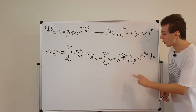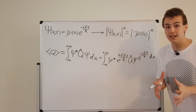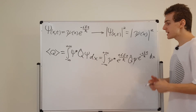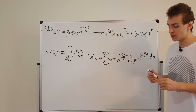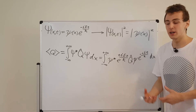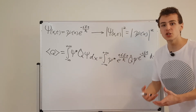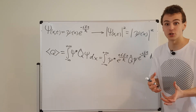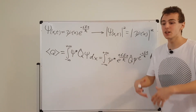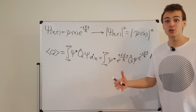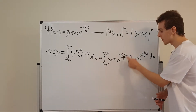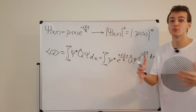Luckily for us, all of the operators we're dealing with depend on x and p. All operators can be written in terms of position and momentum. This is analogous to Newtonian mechanics: in classical mechanics, you can take any quantity you're measuring and write it in terms of position and momentum. If you think of velocity and acceleration, those are just derivatives of position. Momentum is just momentum. Kinetic energy can be written in terms of momentum. And the total energy, or the Hamiltonian, can be written as a function of position and momentum.